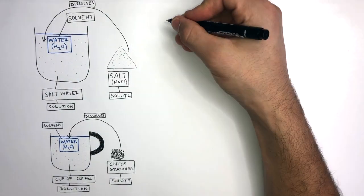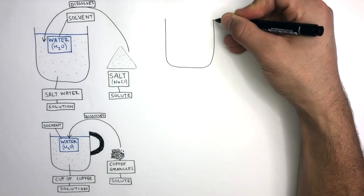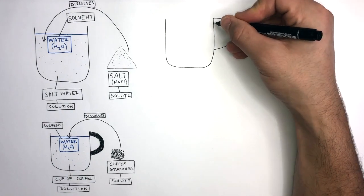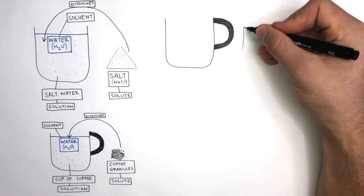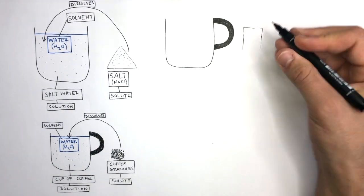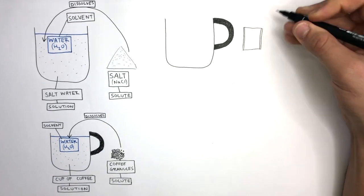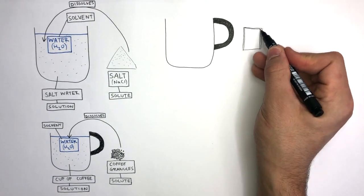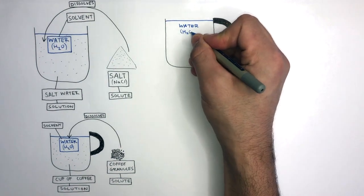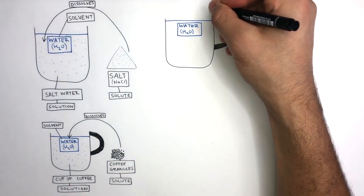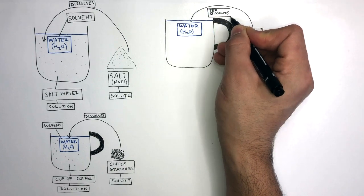To understand what the terms solute, solvent and solution mean, let's imagine we wanted to make a cup of tea. To make this easier to understand, we're not going to make this tea with milk and sugar — we're only going to use a tea bag and some water. The tea bag is placed into the water where the tea dissolves.